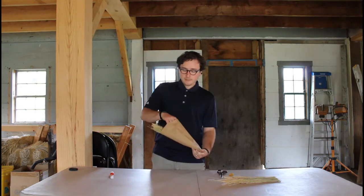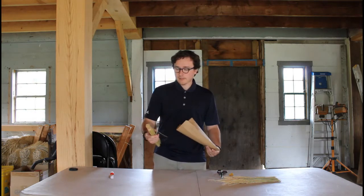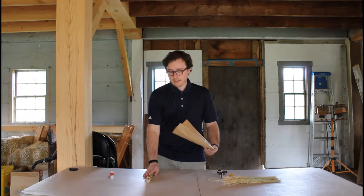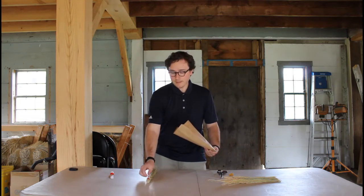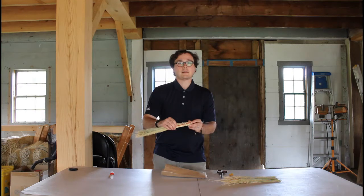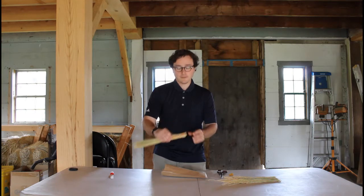So what we first want to do is we're going to open our bag up and pull out our supplies. You're going to have a bundle of broom corn. On that bundle of broom corn is going to be a little plastic needle that we're going to use to tie our broom off at the end.